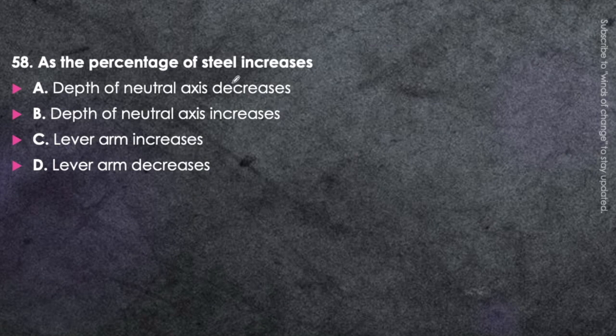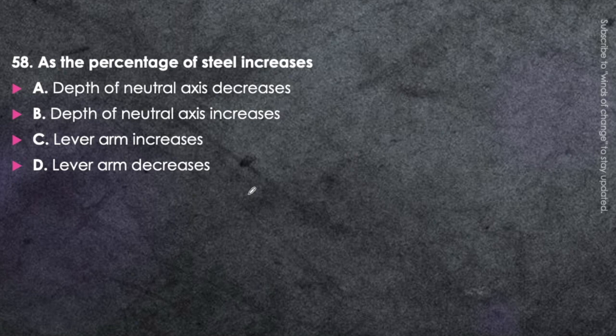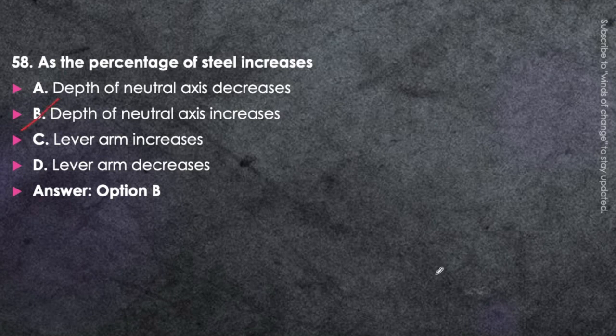Next question: As the percentage of steel increases, the depth of the neutral axis increases — option B. The lever arm is not significantly affected. Since the depth of neutral axis depends on the percentage of steel, increasing steel shifts the neutral axis downward, increasing its depth.